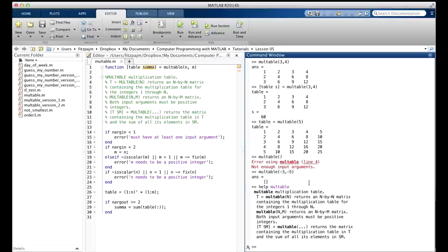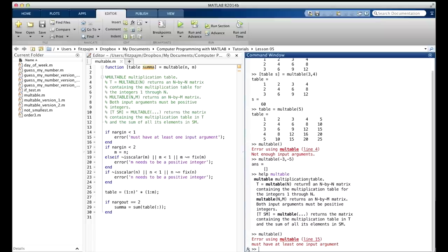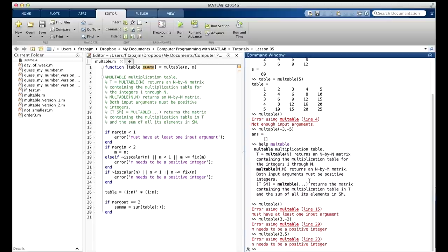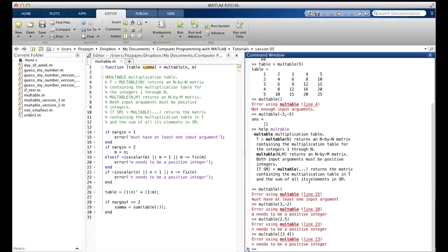But, now, we've got to see what happens if we give it the wrong inputs. So, let's try a few things here. No inputs. Now, we're printing the red stuff out to the user. Must have at least one input argument. So far, so good. M needs to be a positive integer. Let's give it a fraction. Needs to be a positive integer, that's not an integer. It's positive, but it's not an integer.